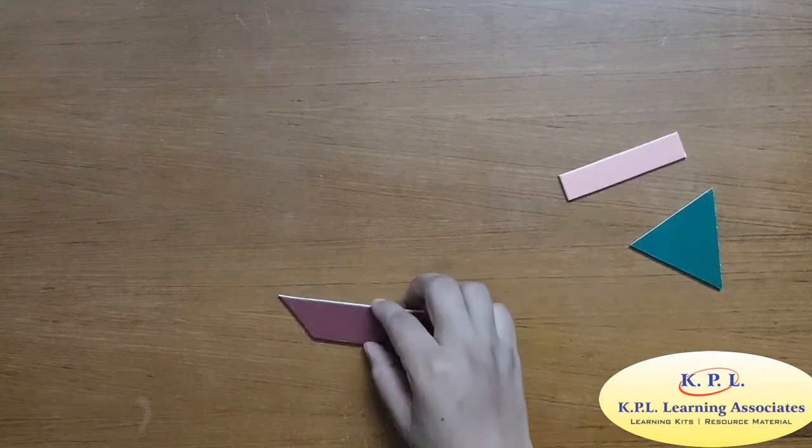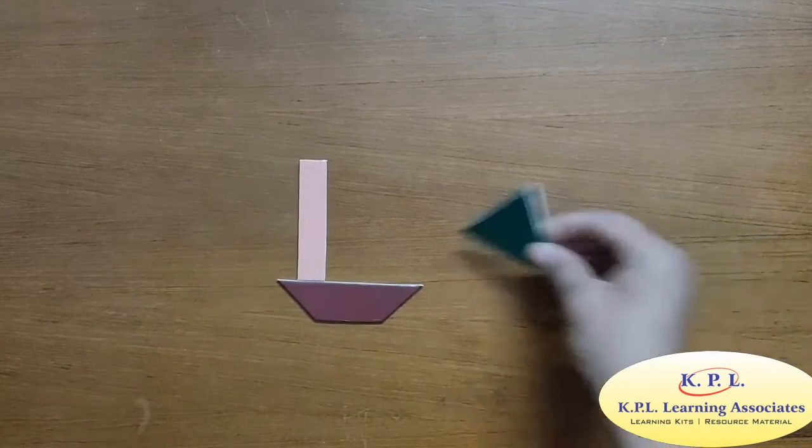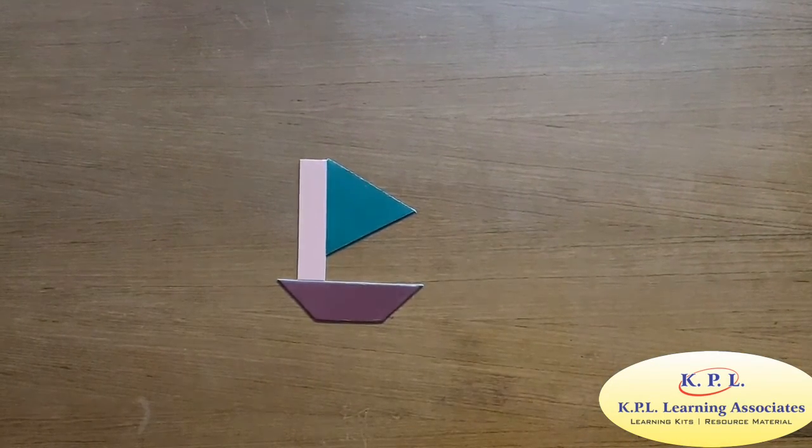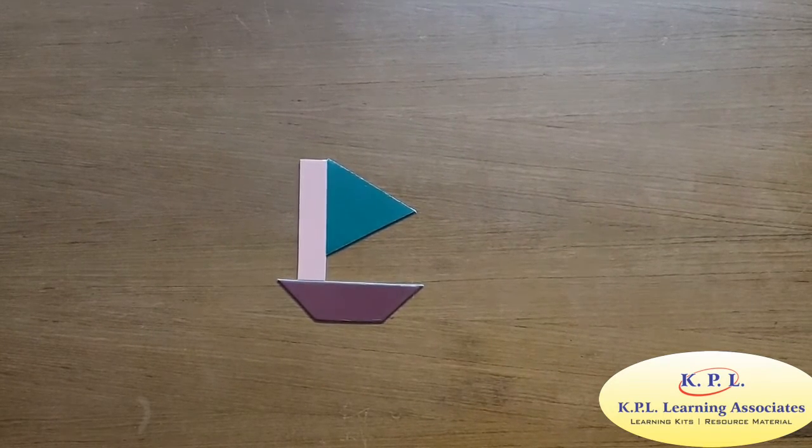Here I have trapezium which looks like boat shape. I have a rectangular strip. I add it like this. And the green triangle as a sailing flag. This is my boat. Boat is of water transport. Look out for other transports too.